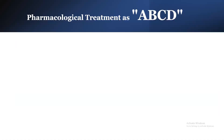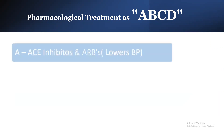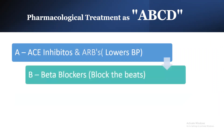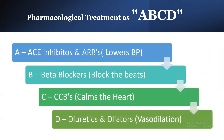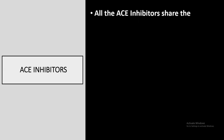Pharmacological treatment can be memorized as ABCD. A is for ACE inhibitors and ARBs, which lower BP and are used as first-choice drugs. B is for beta blockers, which block the beats. C is for CCBs, which calm the heart. D is for diuretics and dilators, which cause vasodilation.